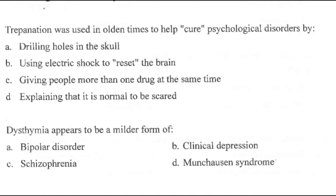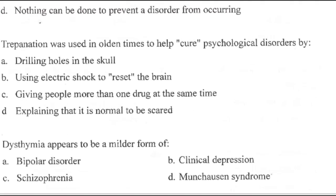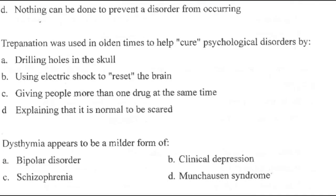Question 98: Trepanation was used in olden times to help cure psychological disorders. How? Options: A, drilling holes in the skull; B, using electric shock to reset the brain; C, giving people more than one drug at the same time; D, explaining that it is normal to be scared. Right answer is A — drilling holes in the skull. That is also why it is called craniotomy.